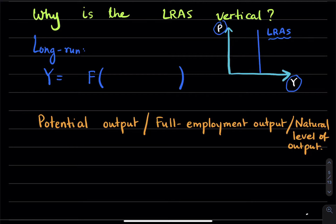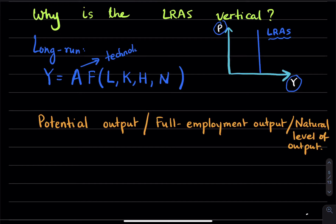Real GDP is determined by labor, capital — which is physical capital like machines and equipment — human capital like education and training, and natural resources. There is also another factor called technology, or technical knowledge, which has a multiplier effect on all of these factors of production. All of these are factors of production.